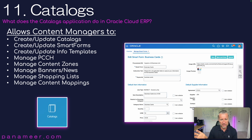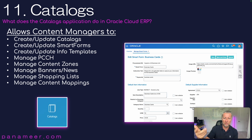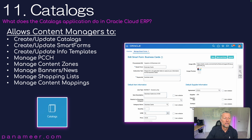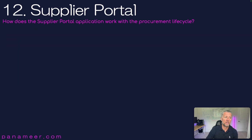You can manage content zones, which group different content for different audiences — by business unit, by person, etc. Shopping lists link items together, and in the 25A responsive UI you can surface your shopping list via categories. Content mappings are also available — all of that is covered within the Catalogs application of Oracle Cloud.